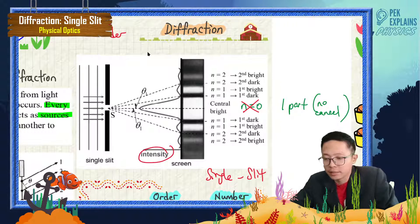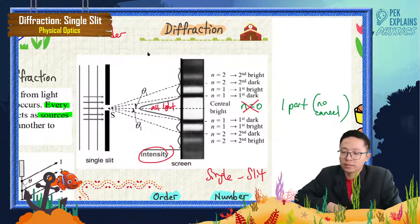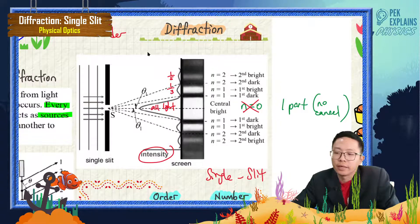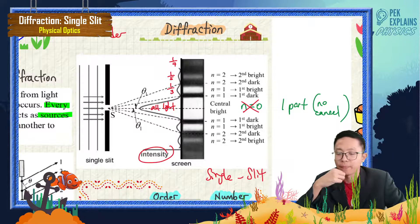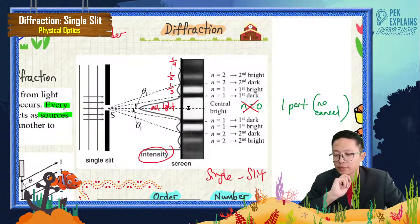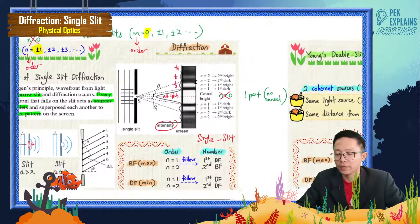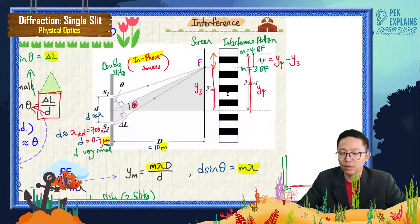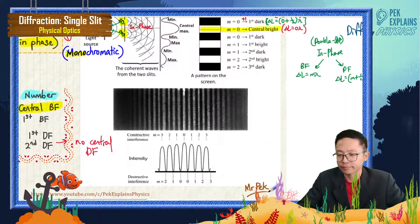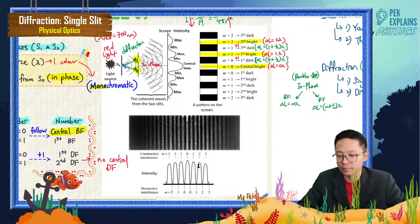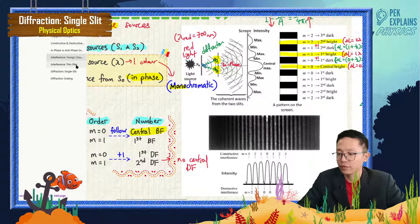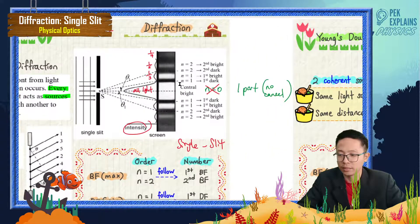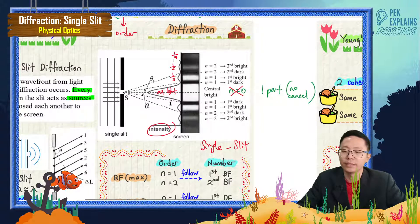The central maximum has all light intensity — that's why it's very intense. The first bright fringe has only one third of light, the second has only one fifth, and the third bright fringe is one seventh of light — you can barely see it. That's why the intensity becomes lower and lower. For double slit there's no such cancellation, so the intensity is all the same for constructive interference. But for single slit they cancel each other, leaving one third, one fifth, one seventh of light.